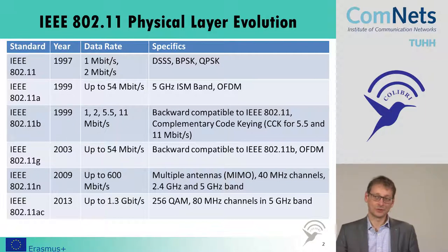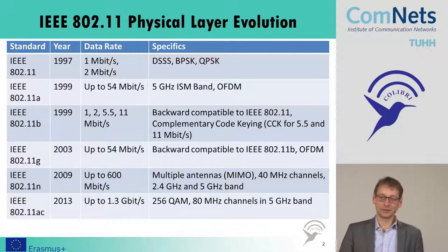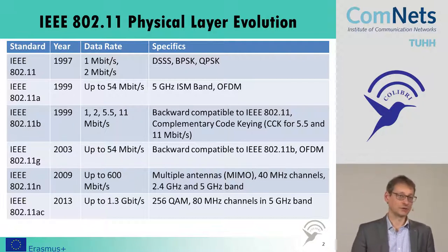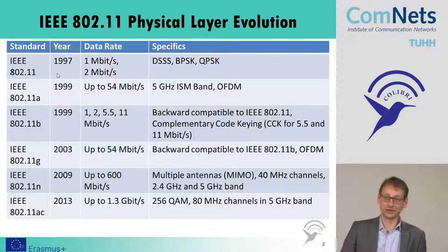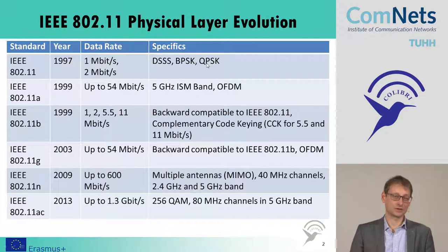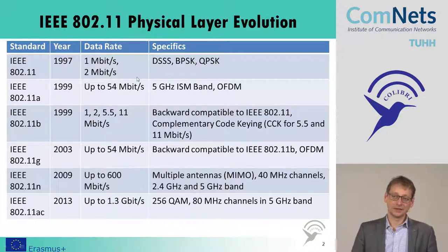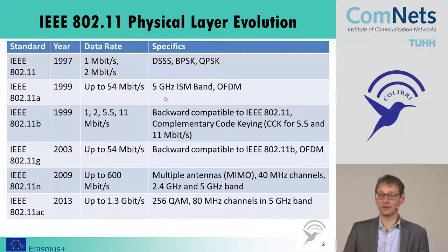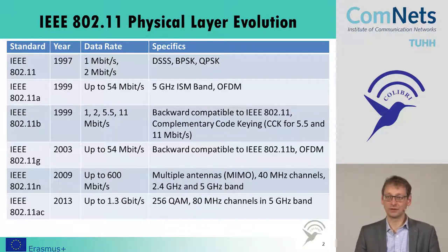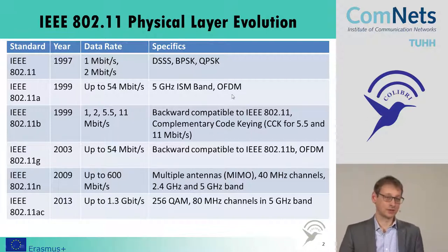We talked already on the physical layer to some extent in the previous part of the module, and I want to show you now how the data rate and the physical layer evolved over time. In 1997 we had the first version, the legacy 802.11, which achieved 1 or 2 megabit with BPSK and QPSK — differential versions of this — and direct sequence spread spectrum technology. In 1999, we saw the 802.11a, which moved to the 5 GHz ISM band, giving us more bandwidth but also a more difficult radio propagation environment, and here for the first time we used OFDM technology.